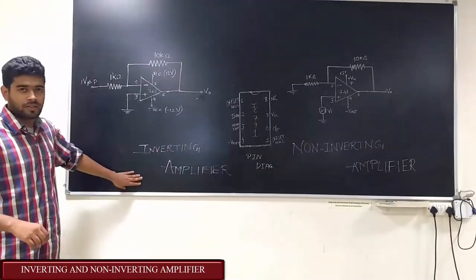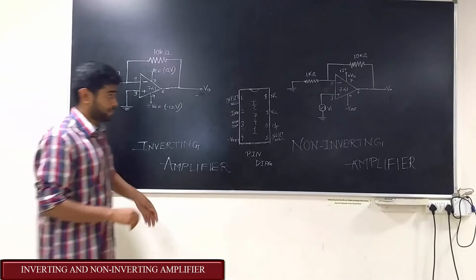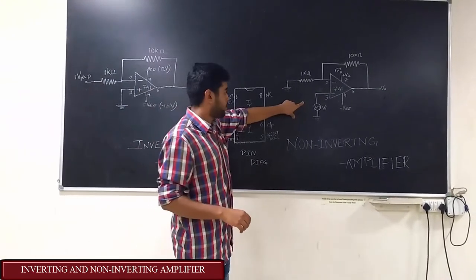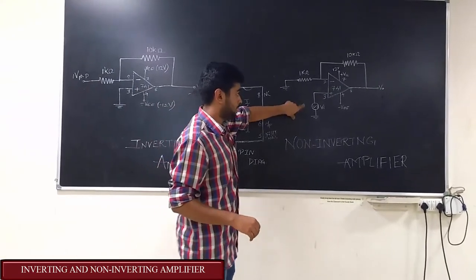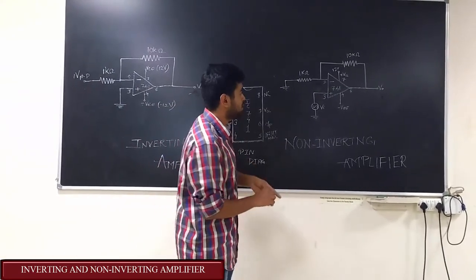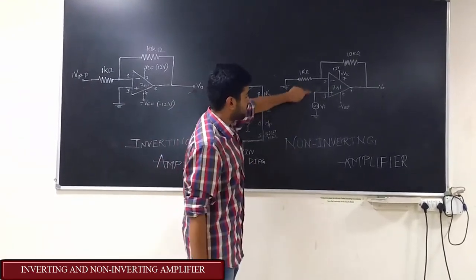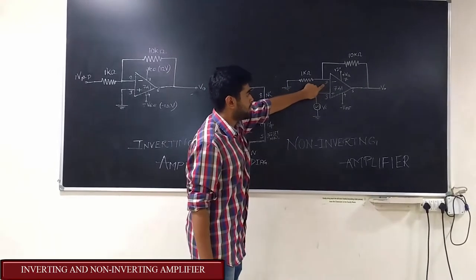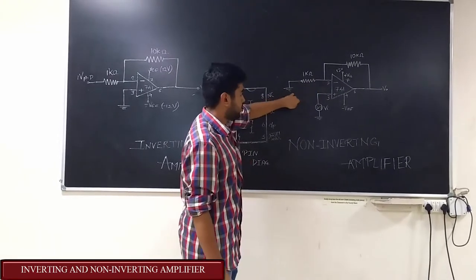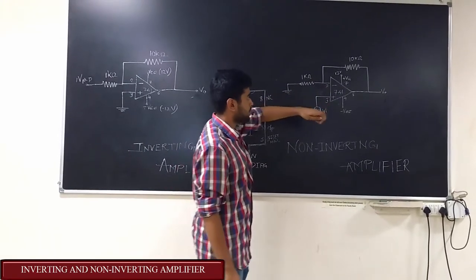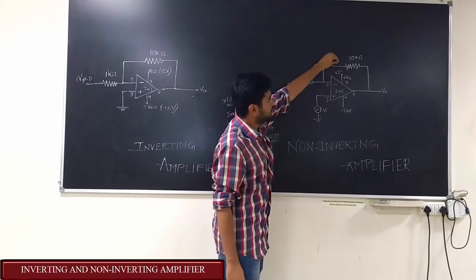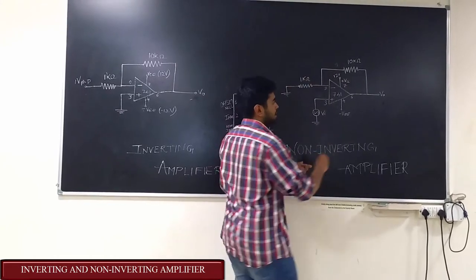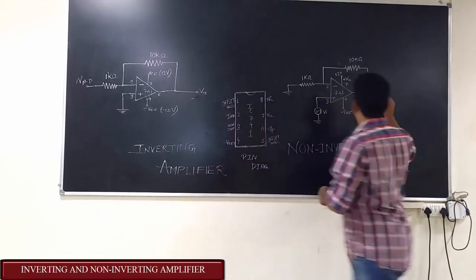This is the circuit diagram of the non-inverting amplifier. As you can see, the input is given at the non-inverting pin and the inverting pin is grounded. This is the feedback resistor and the output is obtained here.